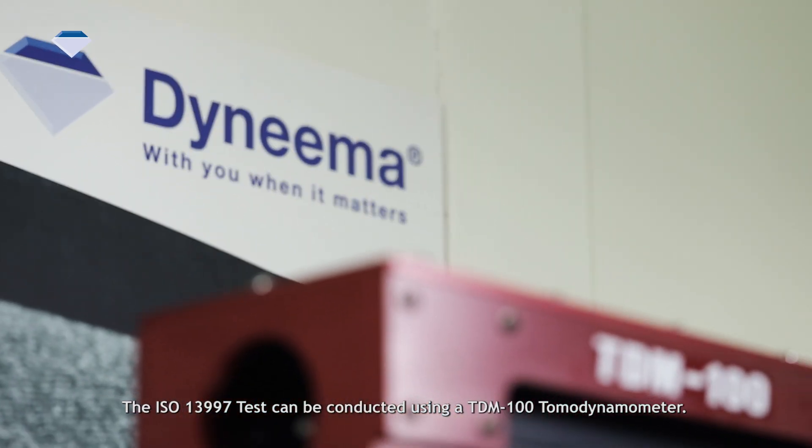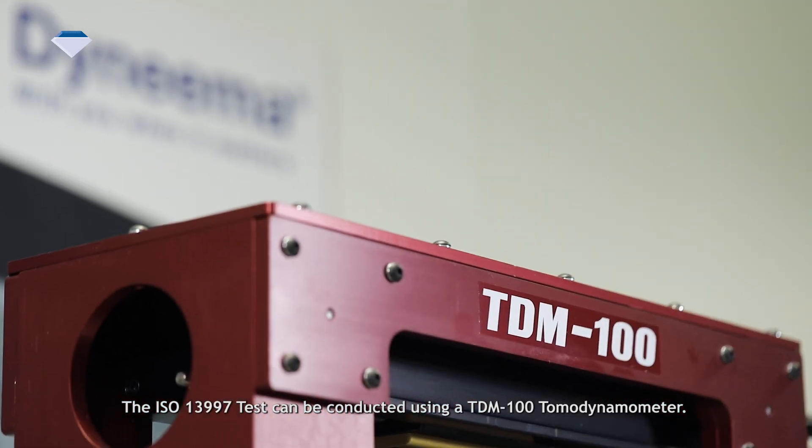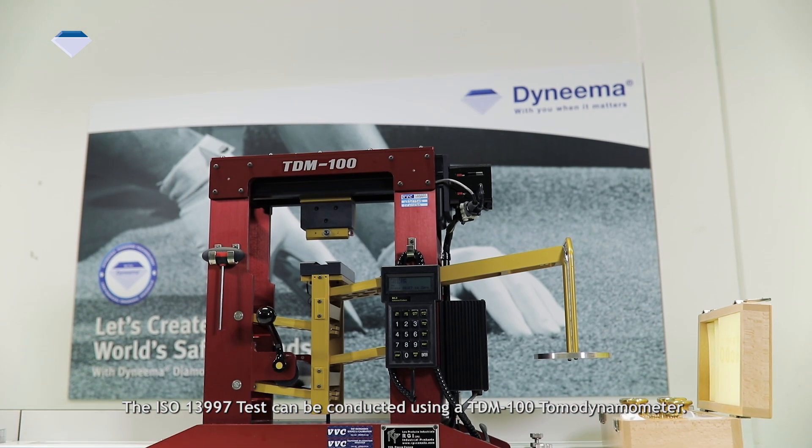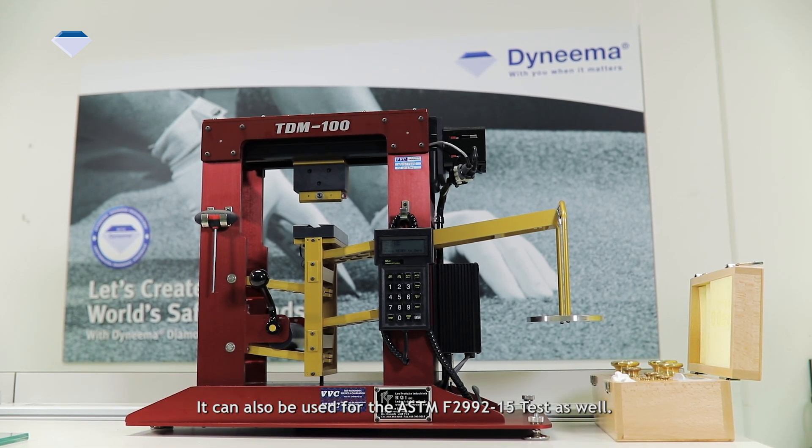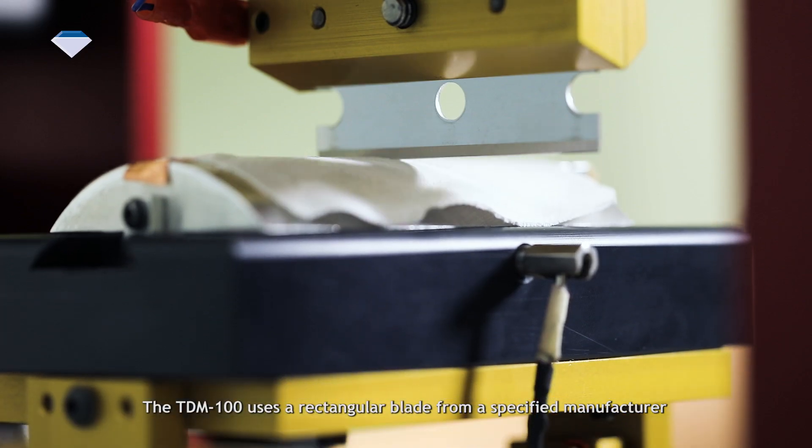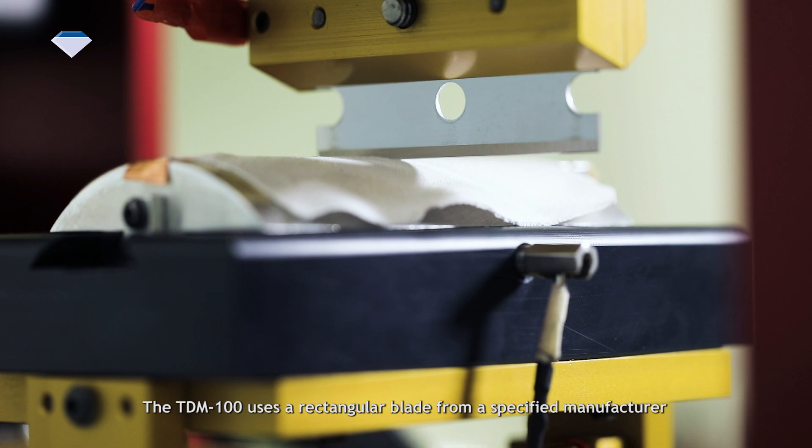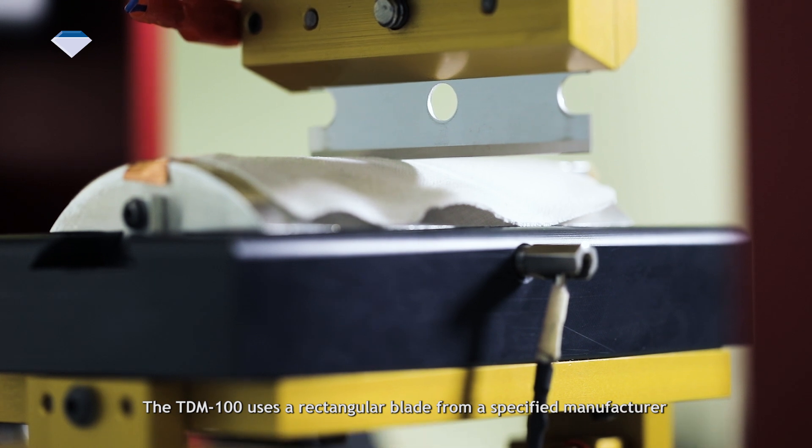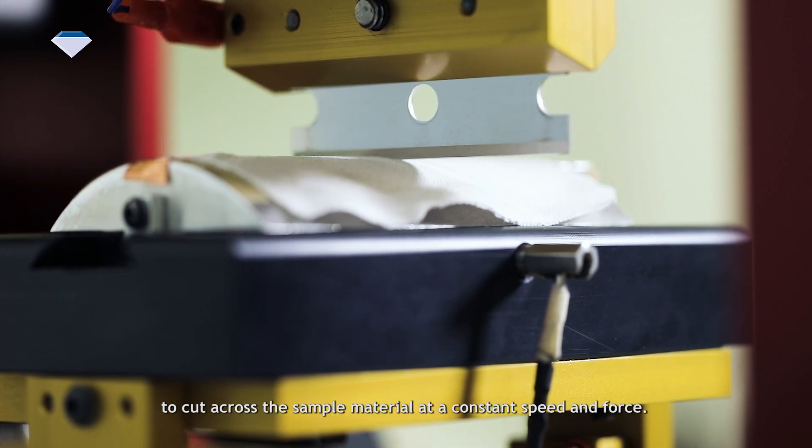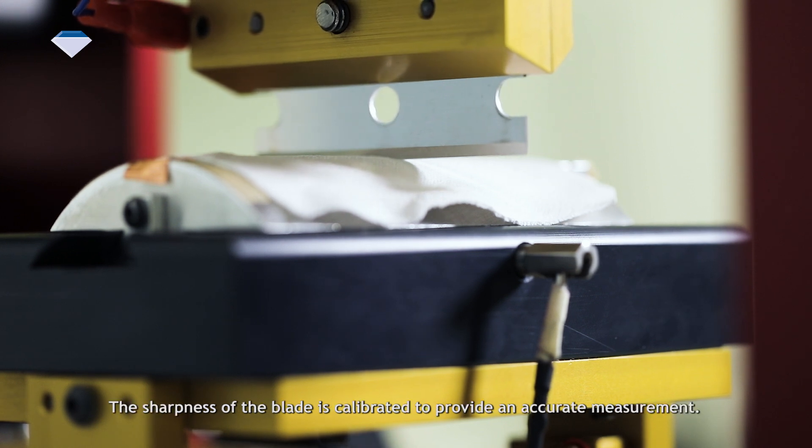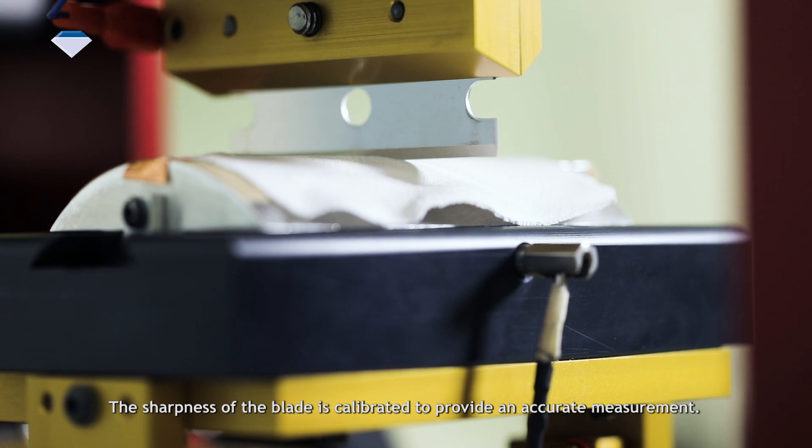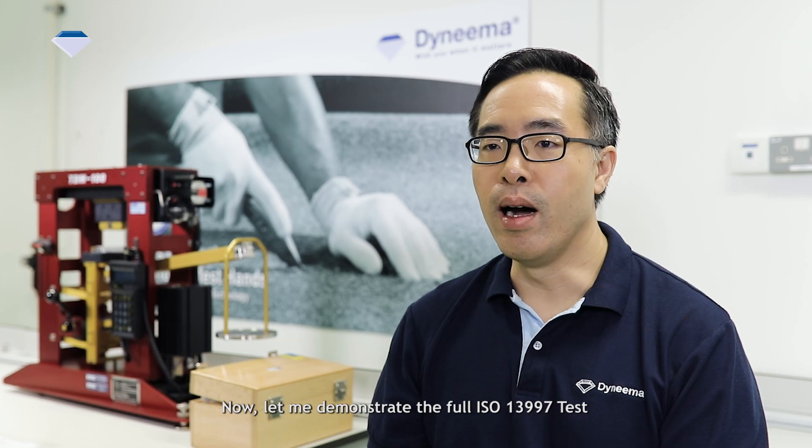The ISO 13997 test can be conducted using a TDM100 Tomo dynamometer. It can also be used for the ASTM F2992-15 test as well. The TDM100 uses a rectangular blade from a specified manufacturer to cut across the sample material at a constant speed and force. The sharpness of the blade is calibrated to provide an accurate measurement.